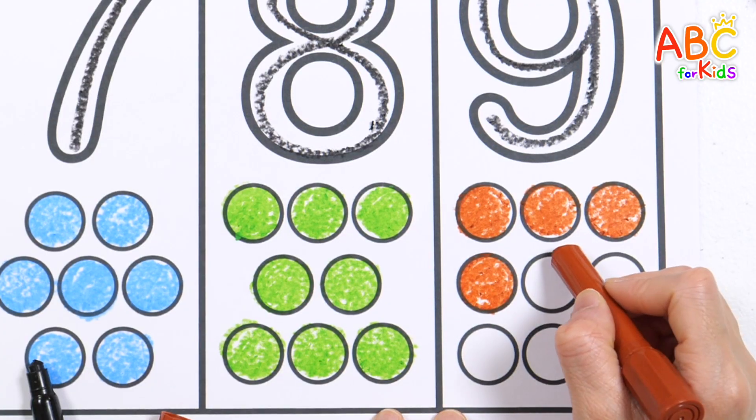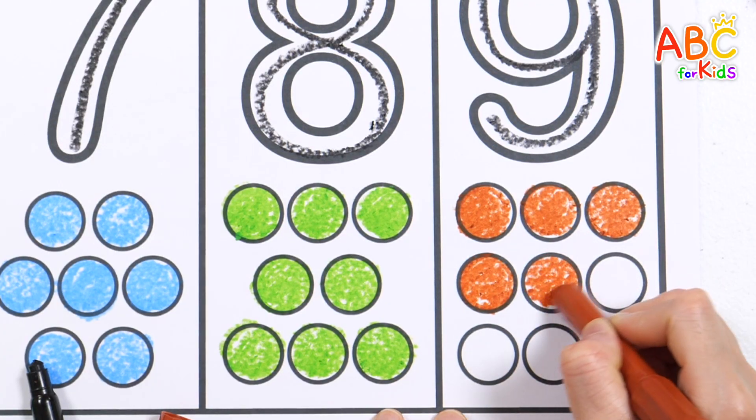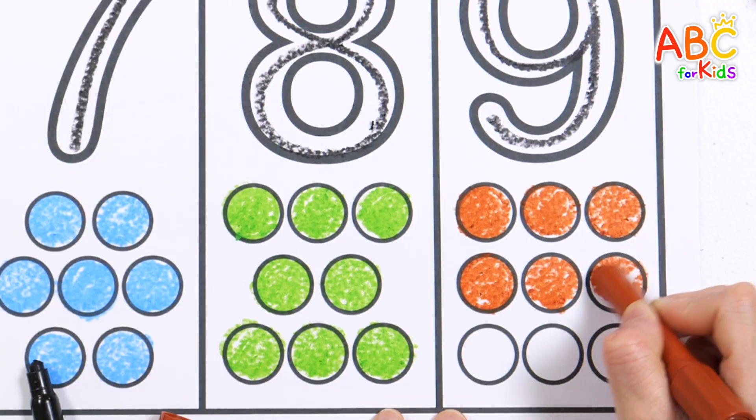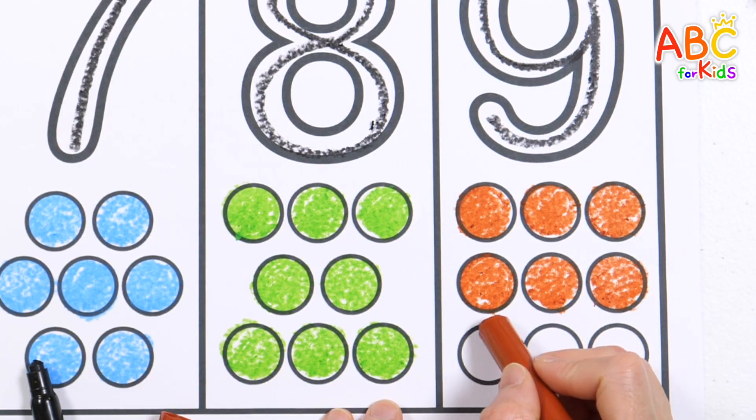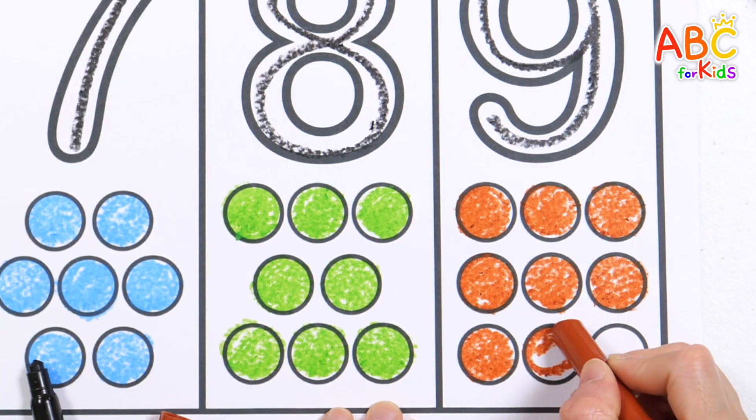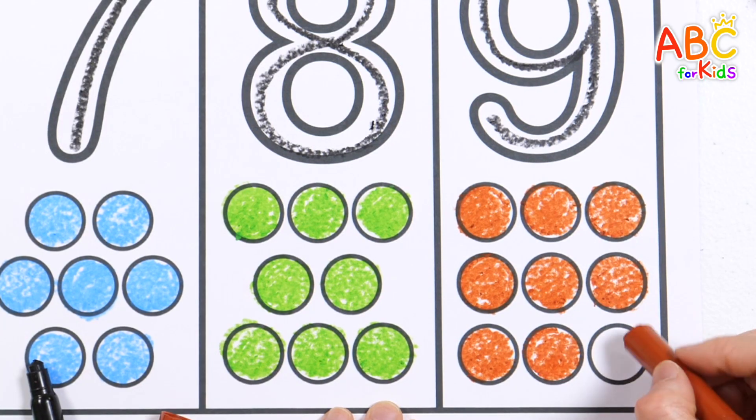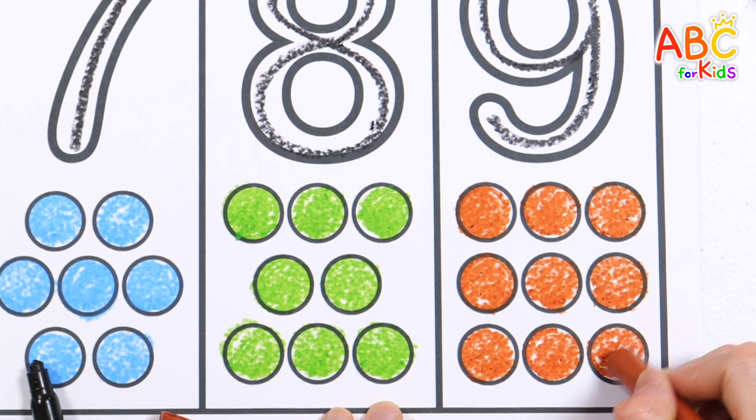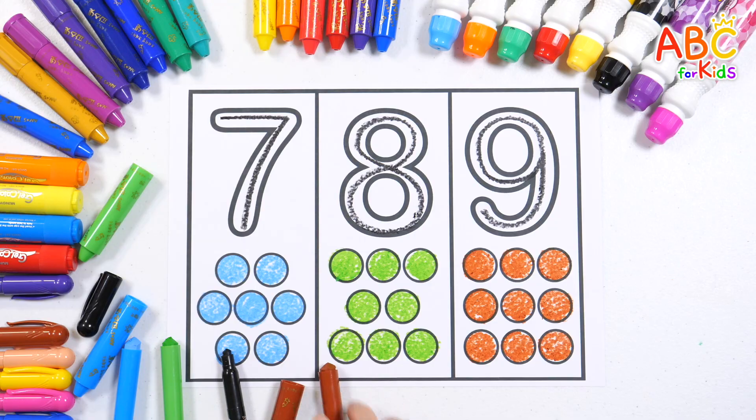O is for octopus. O is for octopus. Six. Open it up when rain comes down. Seven. Nine. Good job.